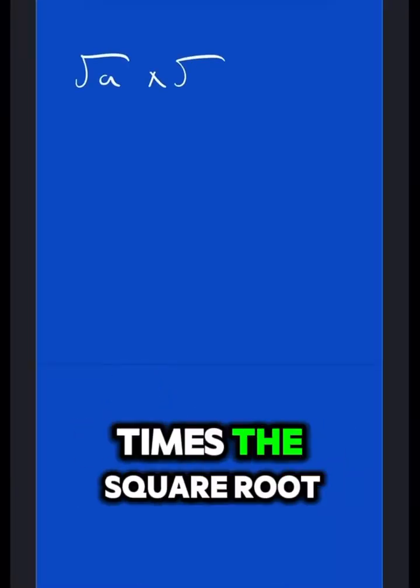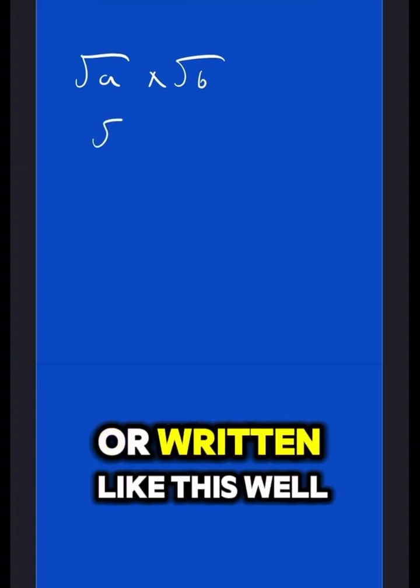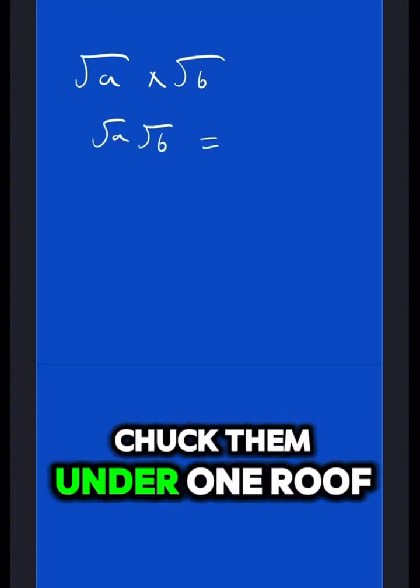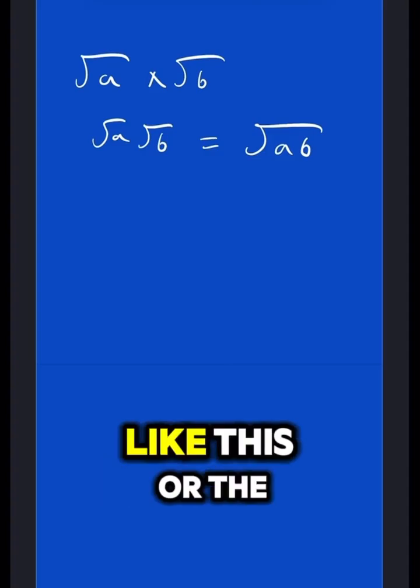If you have the square root of a times the square root of b, all written like this, well, you might as well chuck them under one roof and just put them next to each other, like this.